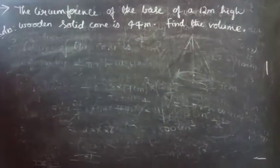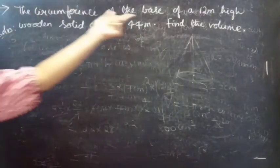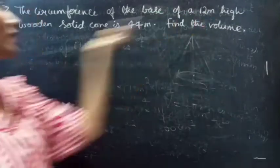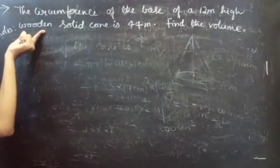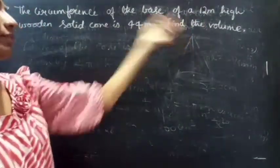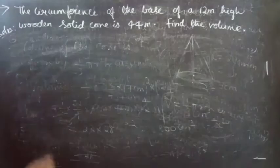Problem: The circumference of the base of a 12 meter high wooden solid cone is 44 meter. Find the volume.